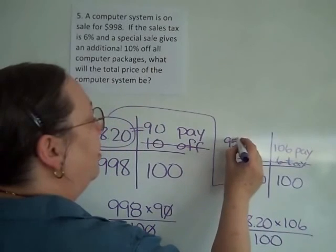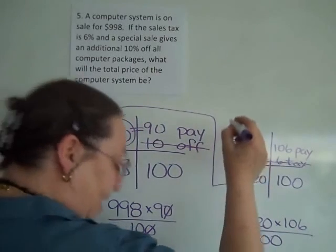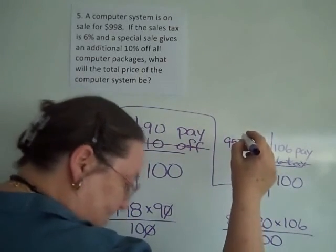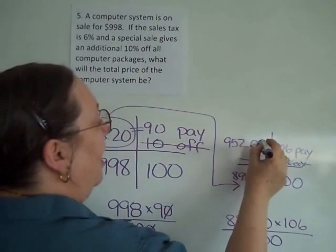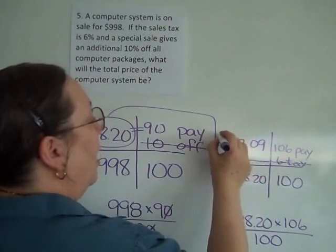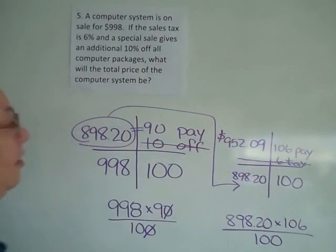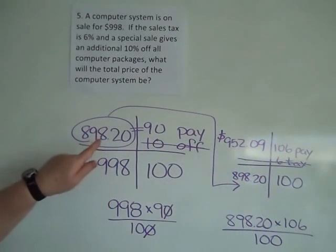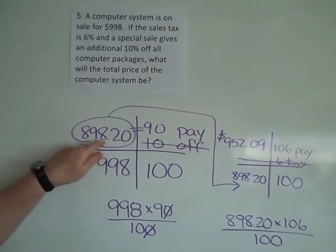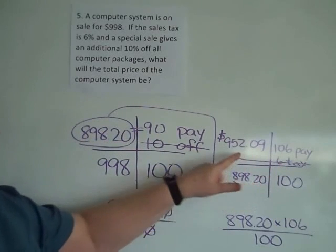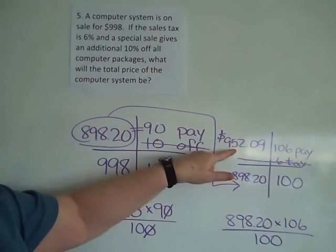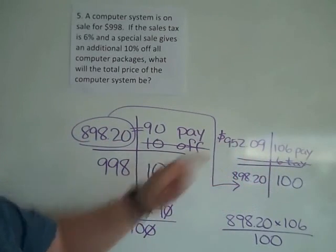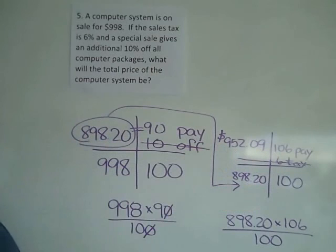Using your calculator, that comes to $952.09. So after the sale price, an additional 10% off, and some sales tax, I finally end up paying $952.09.